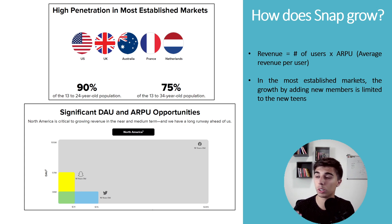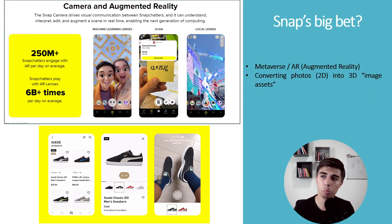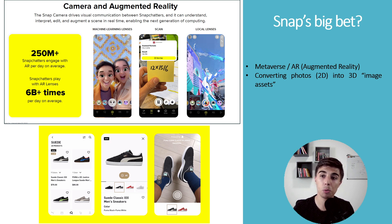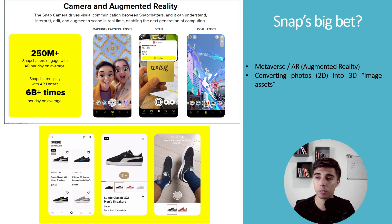So what Snap needs to do is bring more users in these most valuable markets — which will be a challenge — but internationally there's room to grow, and the average revenue per user needs to increase. One of their big bets is augmented reality. The number of users that engage with AR per day is over 250 million, using AR lenses over 6 billion times per day on average — these are big numbers. It's the same space where Facebook is expanding, more metaverse-related.